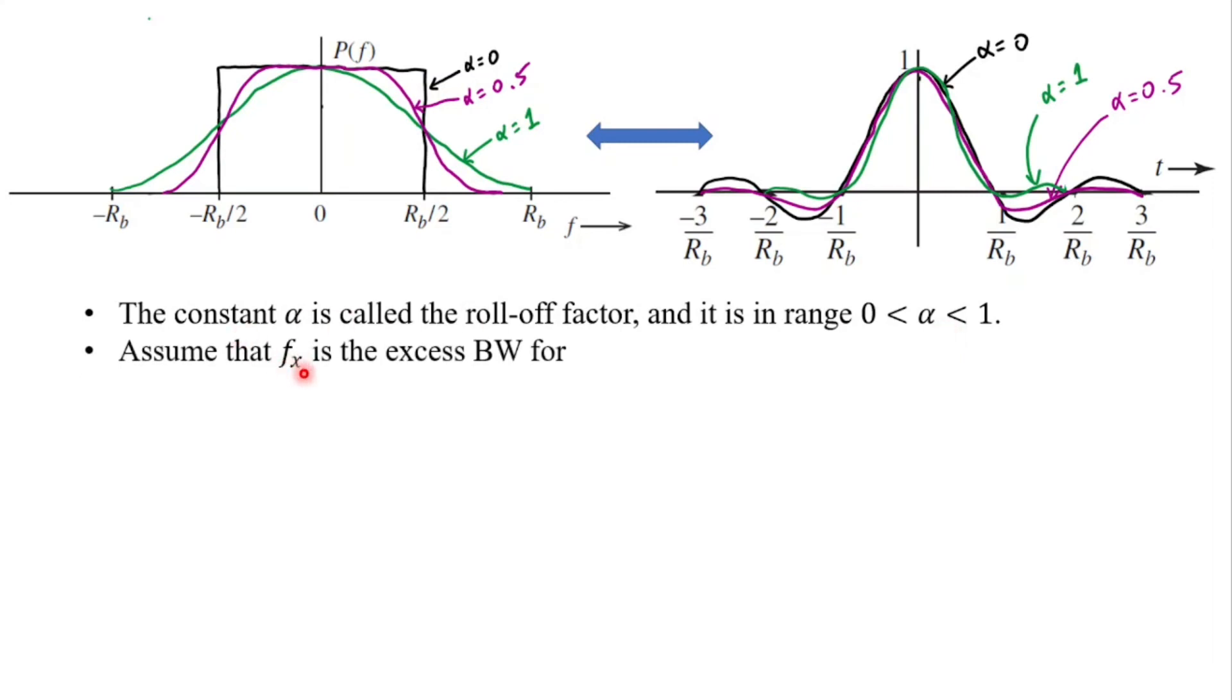So herein we can assume that fx defines an excess bandwidth that is bandwidth beyond Rb by 2. So we have three cases. In the first case fx is simply Rb by 2 for value of alpha equal to 1. So this is the maximum allowable bandwidth under the Nyquist criterion. Next we have fx which is equal to Rb by 4 for alpha value of 0.5. And lastly we will not have any excess bandwidth when we set the value of alpha equal to 0.